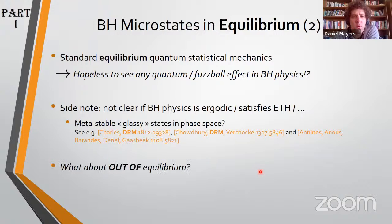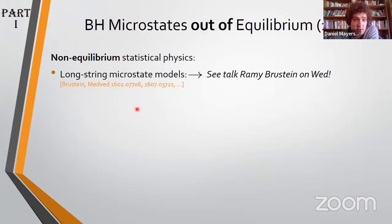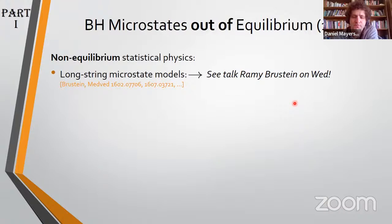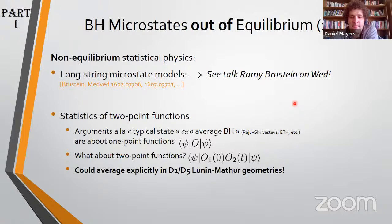More interestingly, even if the equilibrium physics argument is true, we should think about out-of-equilibrium physics. Here it's much less clear that standard statistical physics arguments will give you no deviation from black hole physics. I want to give a shout-out to the long string microstate models, which are a very exciting development — we'll hear more about that on Wednesday. This is an idea where we can look at the non-equilibrium physics of typical states and see deviations from black hole physics.